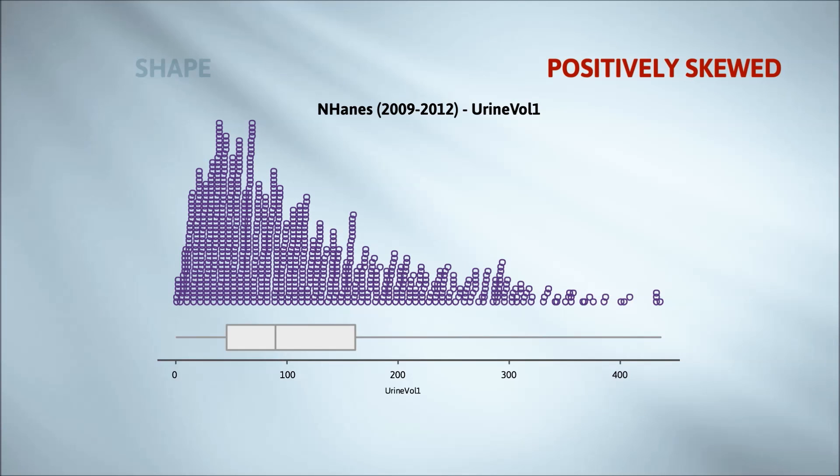Something that will probably look strange to you in this dot plot is the way the towers of points lean. It's not something to worry about. It's a consequence of Inzite stacking points that are very close together, but not identical.